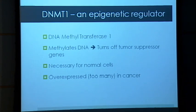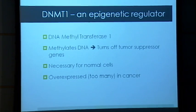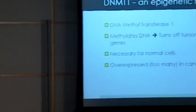DNMT1 is necessary in normal cells — you can't express all of your genes at once. But there are way too many of them in cancer cells, and accordingly there's too much methylation in front of tumor suppressor genes, which are then being turned off. The idea for this project is that if we can characterize how DNMT1 works, then maybe we can develop better targets for more efficient cancer therapies.